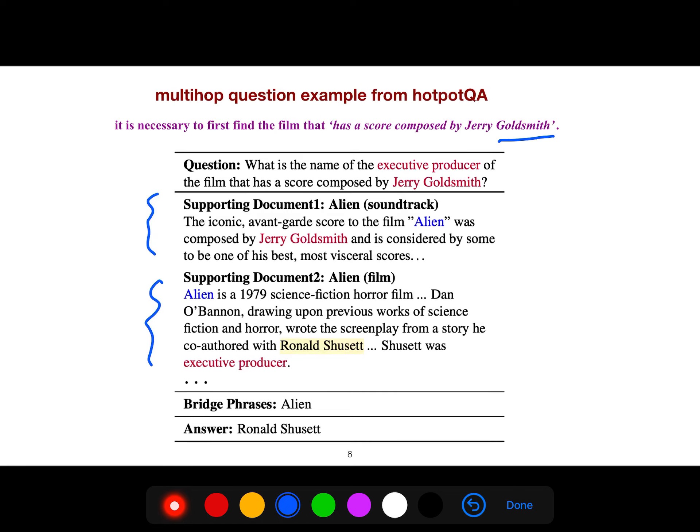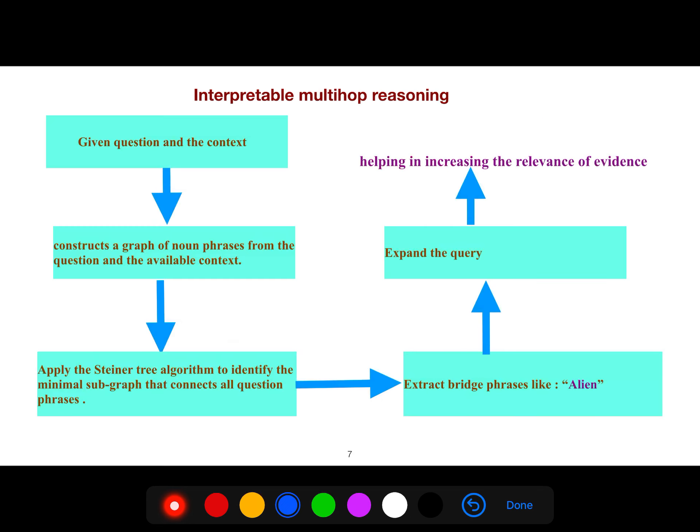In a multi-hop question example from HotpotQA, it is necessary to first find a film that has a score composed by Jerry Goldsmith. There are two supporting documents. First, we find Jerry Goldsmith, and then you have bridge phrases. First, you should know 'the alien,' and then because of alien, you find this and focus on that piece of evidence - that is the work of a reader. Then you answer the question. The answer is Ronald.